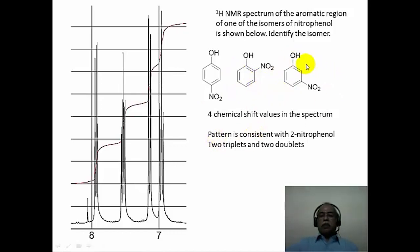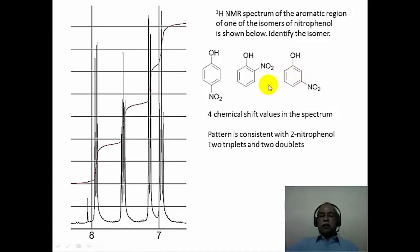If you look at the meta-nitrophenol substitution pattern, there is a hydrogen with no ortho coupling partners, so it should appear as a singlet or as a triplet with a very small meta coupling of about 1.5 to 2 hertz. You do not see any such triplet with very small meta coupling — all these multiplets have ortho coupling. That would be consistent only with ortho-nitrophenol as the correct answer.